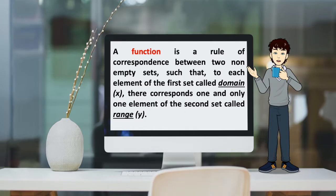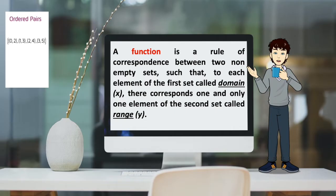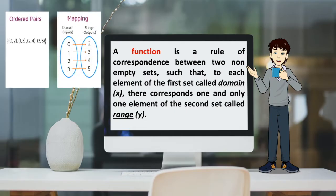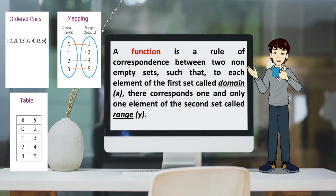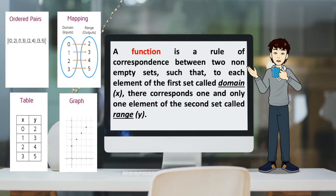There are different ways on how to identify a function. We have ordered pairs, mapping diagrams, a table, a graph, and also a rule.